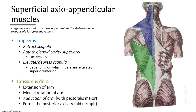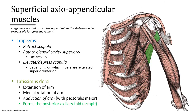The latissimus dorsi in green is the main muscle for adduction of the arm, pulling it back down to the side. When the arm is extended out to the side, the latissimus dorsi forms the back wall of the armpit. From this anterior view in green, we can see the part of the latissimus dorsi that forms this posterior portion of the armpit.